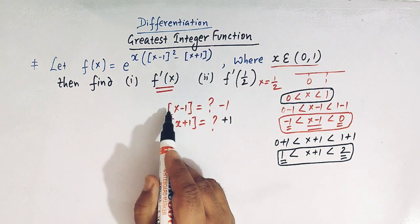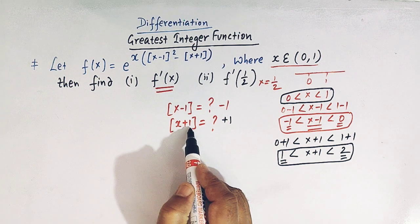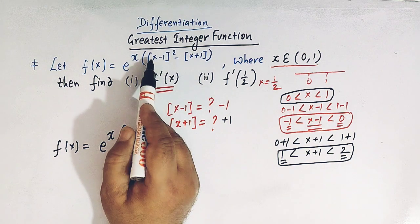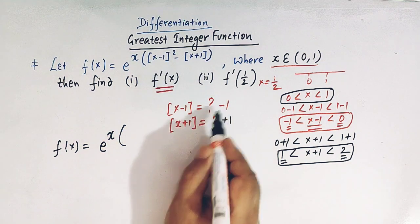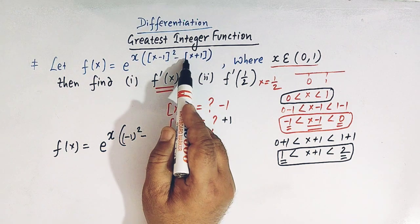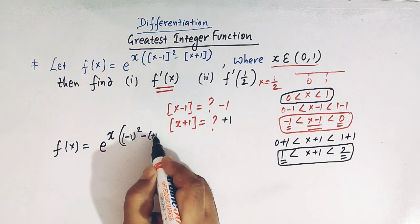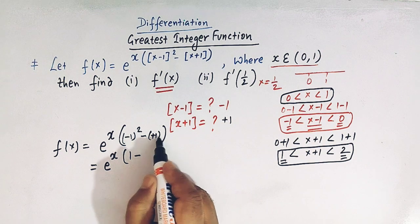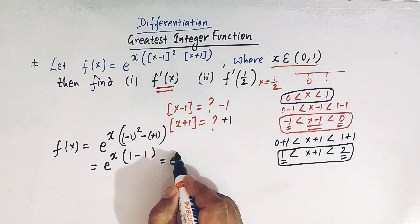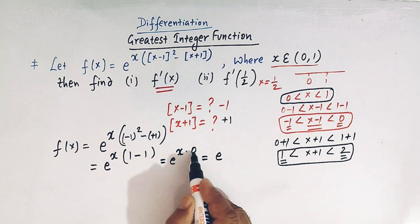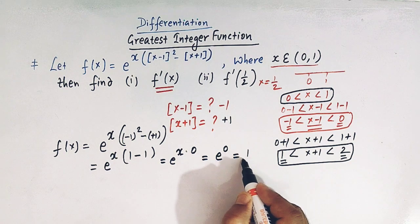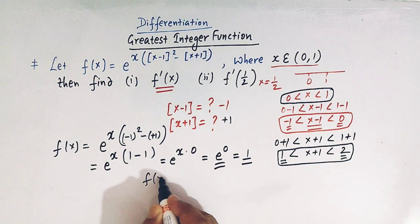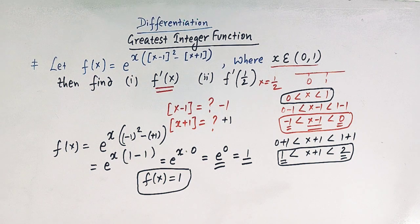We have now obtained both values. Our function reads: f of x equals e raised to x, times the square of greatest integer of x minus 1, which is minus 1 squared, minus greatest integer of x plus 1, which is simply plus 1. Simplifying: minus 1 squared is 1, so we have e raised to x times 1 minus 1, which is e raised to x times 0, equal to e raised to 0, which equals 1. So the function f of x equals 1, a constant function.